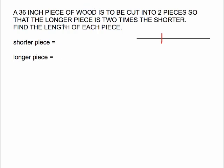You were told nothing about the shorter piece so the shorter piece has got to be your x. The longer piece is two times the shorter which is 2x. Once you have named those put those on the picture, here's my shorter piece of x, my longer piece of 2x.